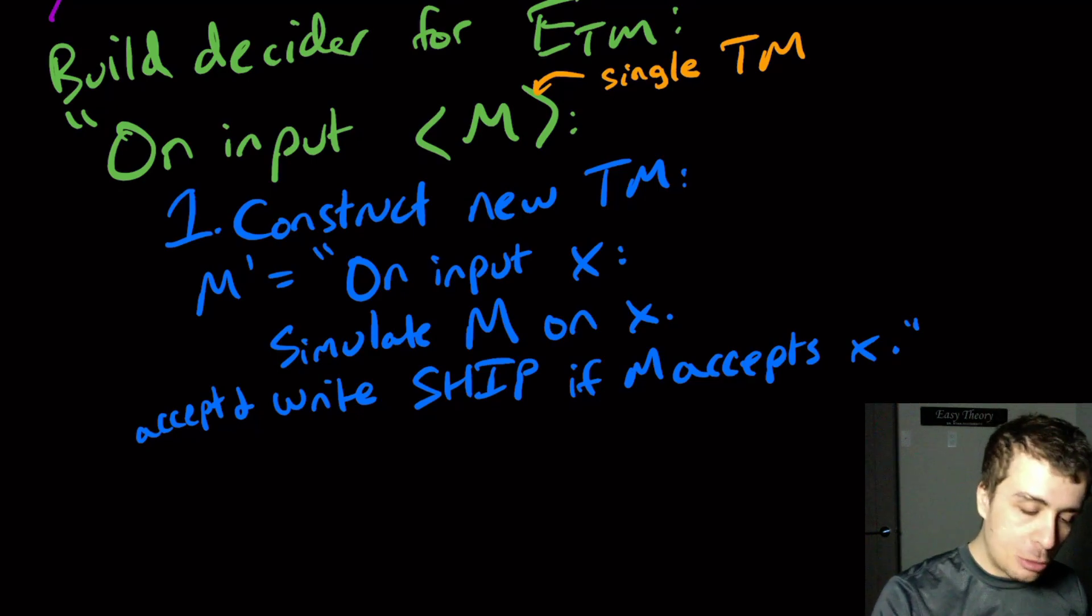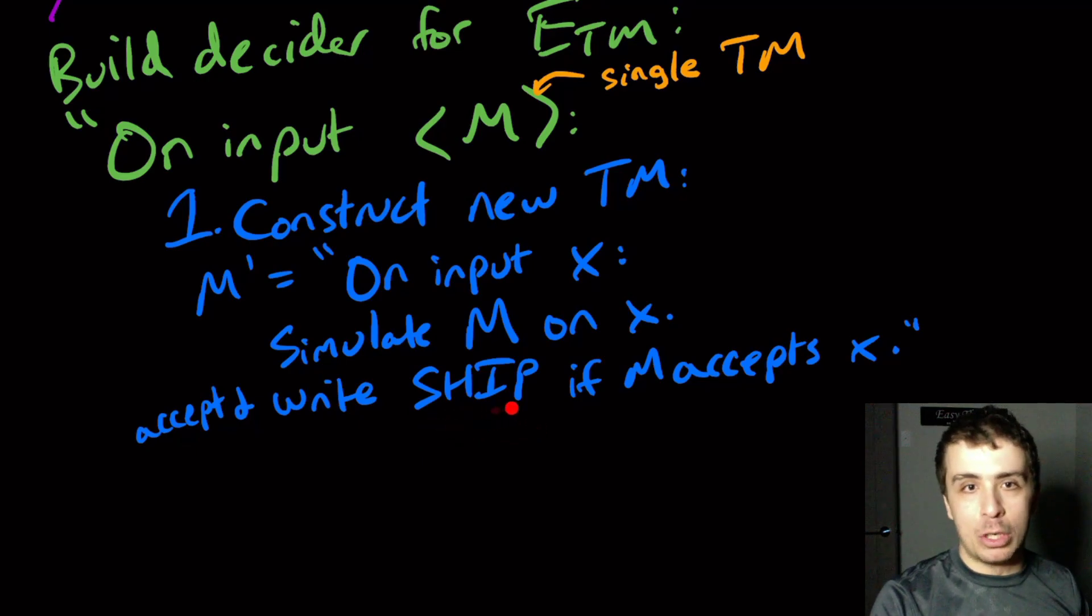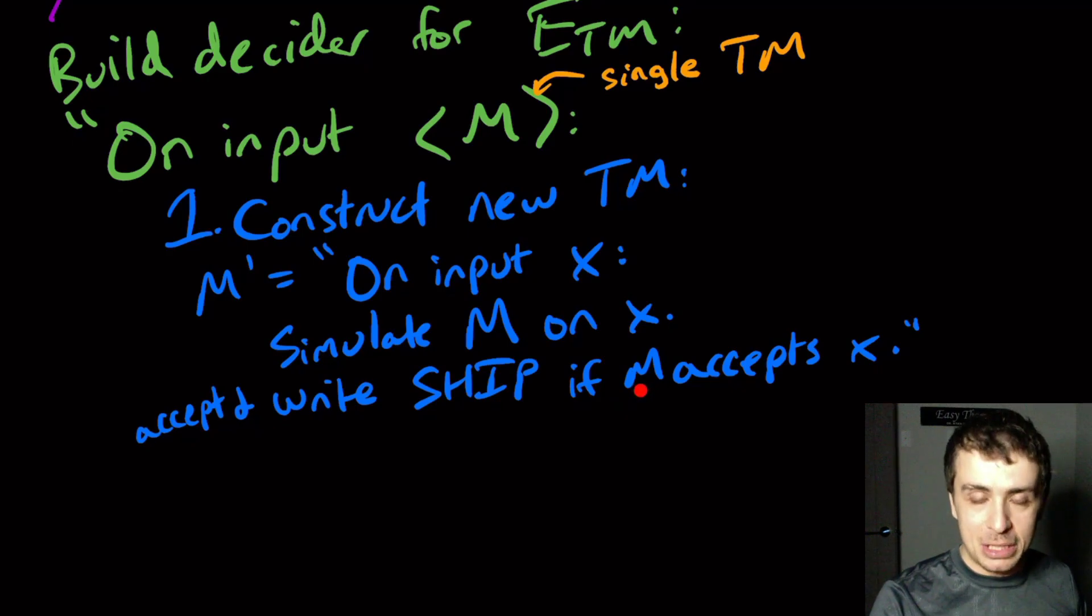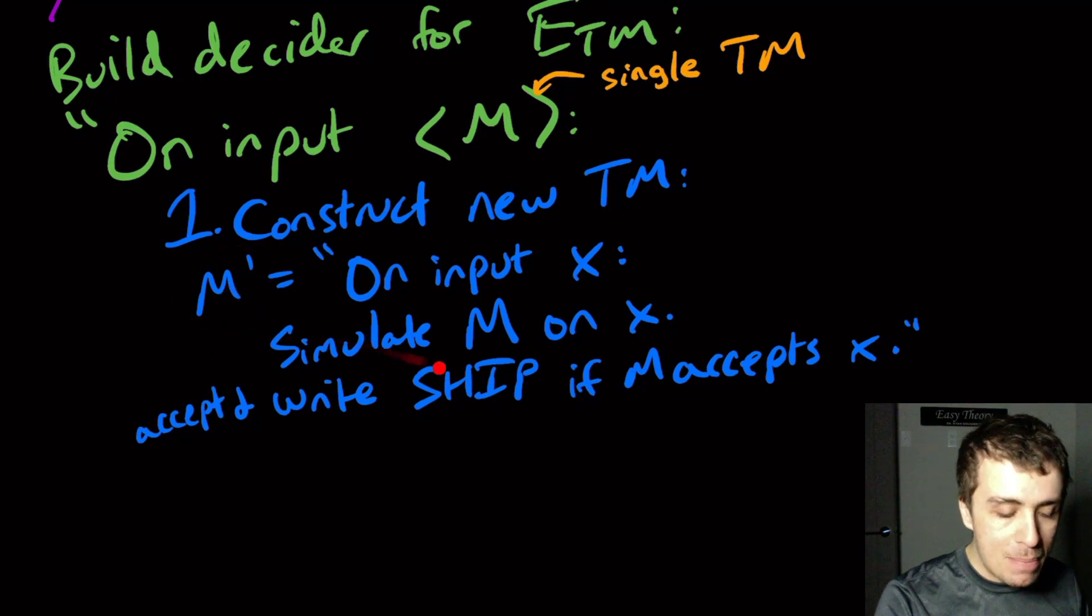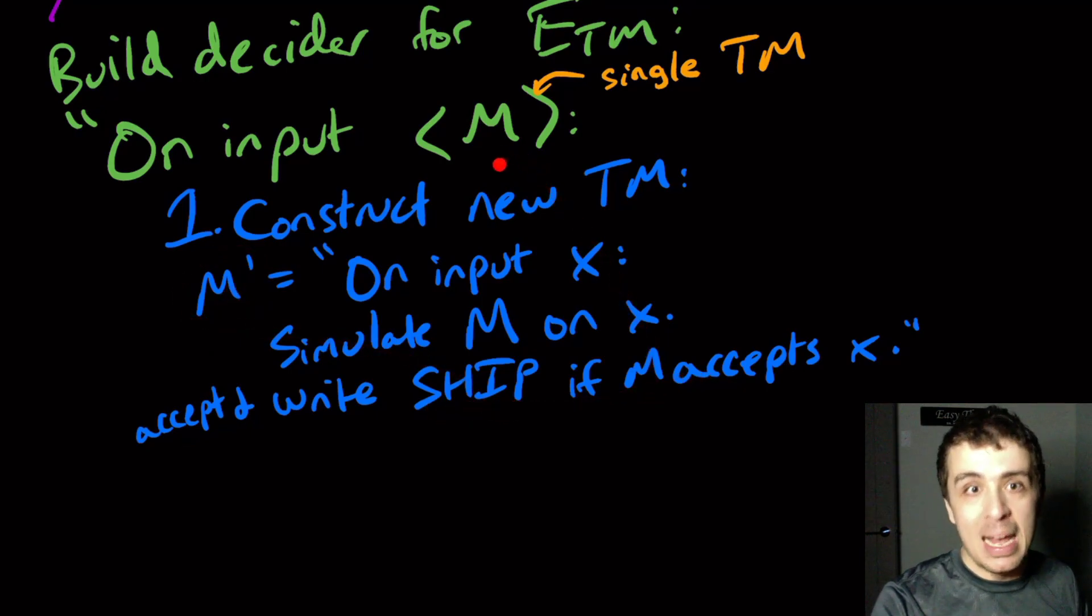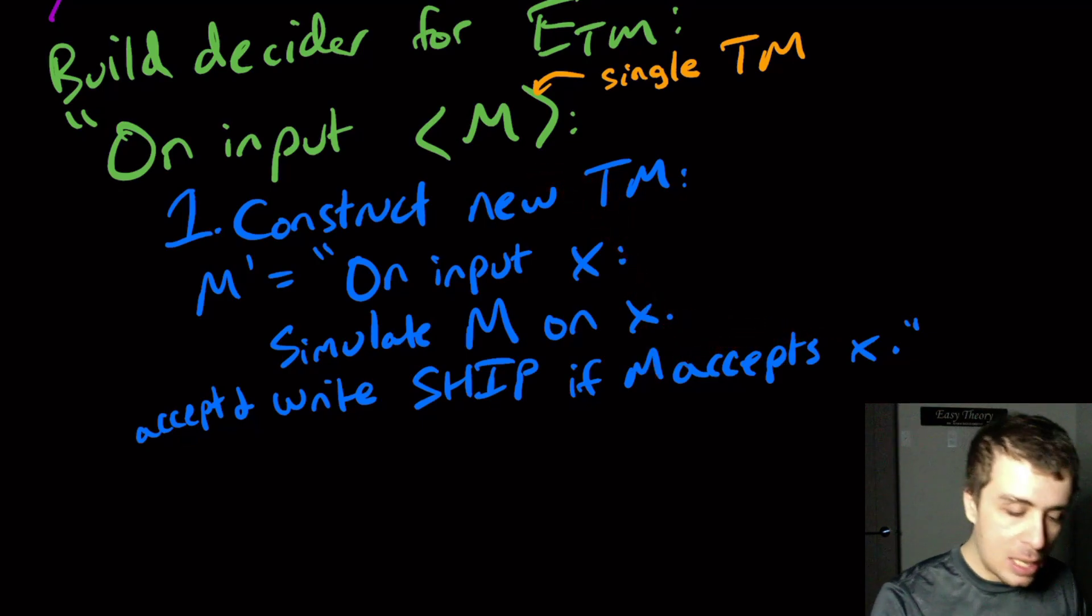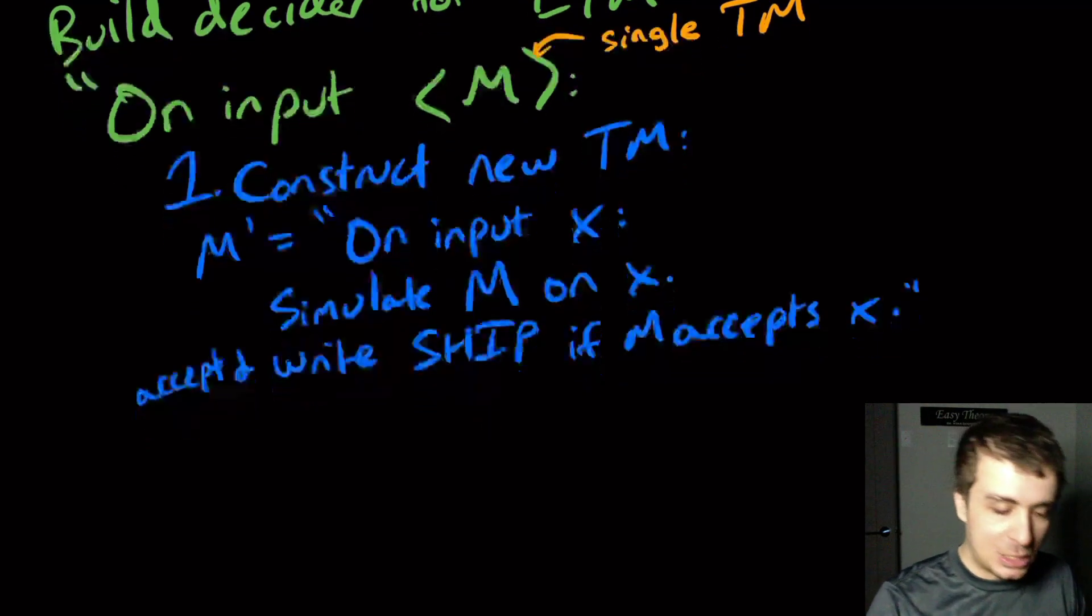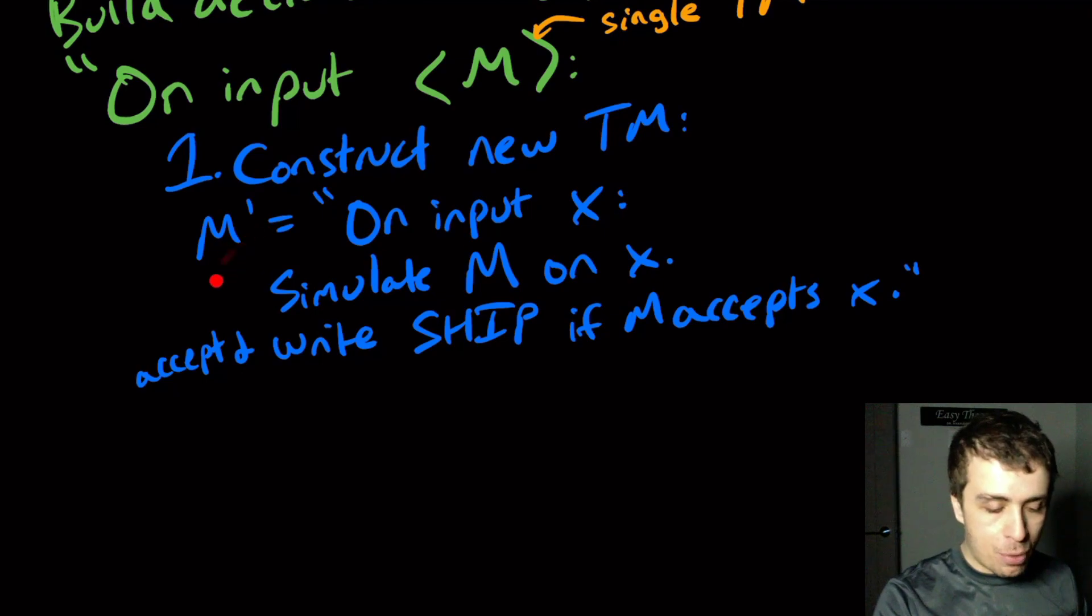So let's think about what happens. If M prime accepts anything at all, then it writes the word ship because if it accepts something, then it writes the word ship. If it doesn't accept anything, then we'll never actually hit this step right here because we can only do it if the original machine M accepts x. If M prime writes the word ship, that means that M actually accepted something because no matter what the input was, it will write something if the original machine accepts x. If M prime doesn't write the word ship, then it couldn't have been that M actually accepted anything. So the question of whether M prime writes the word ship is equivalent to asking whether M's language is empty.